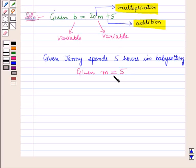Now for M equals 5 we have to find the money earned by Janie. That means for M equals 5 we have to find the value of B. So for M equals 5, B will be equal to 20 times 5 plus 5.